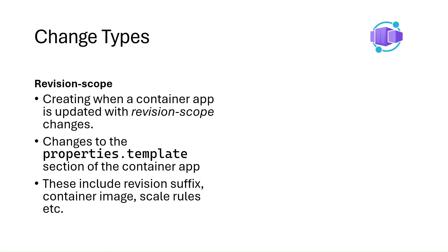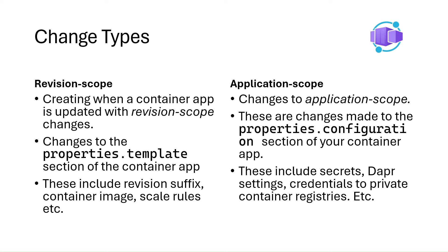Application scope changes apply to all revisions when you deploy your container app, and new revisions aren't created for these changes. They are defined by any change to parameters in your configuration section of your resource template, including secret values, revision mode, ingress configuration, traffic splitting rules, labels, credentials for private container registries, and DAPR settings.